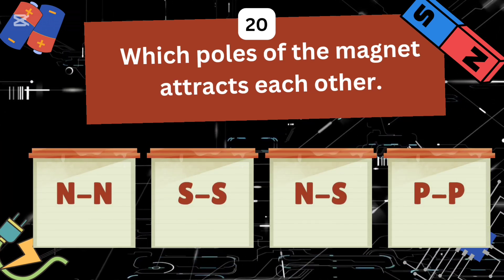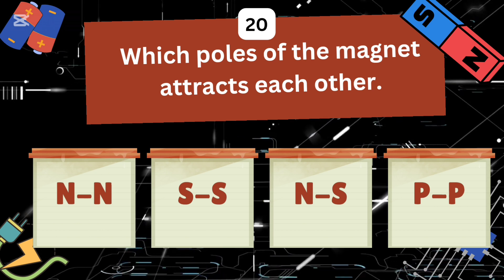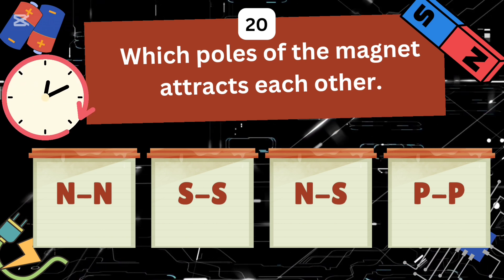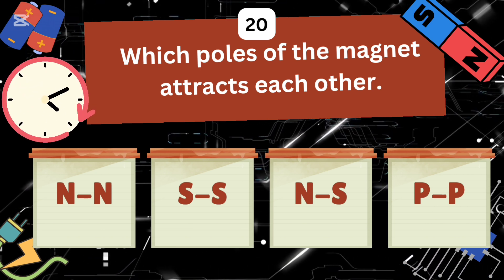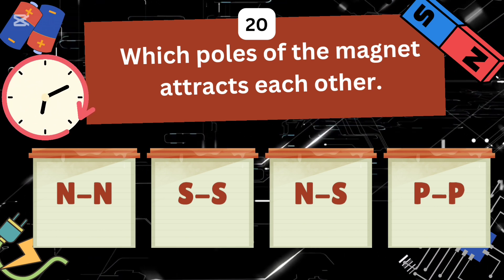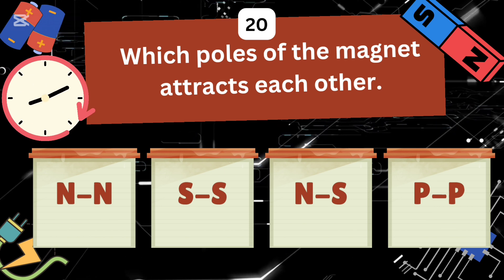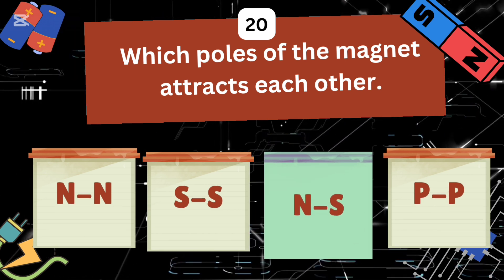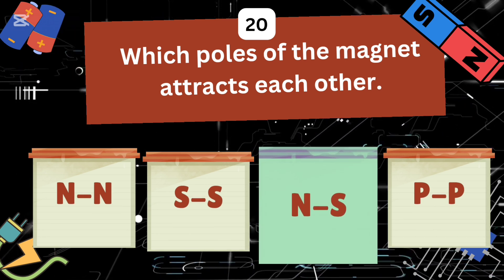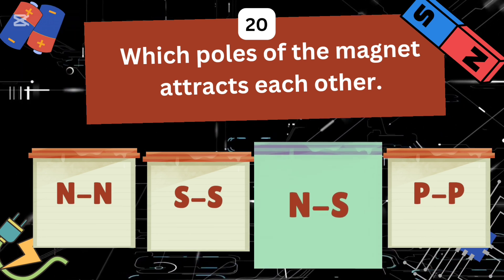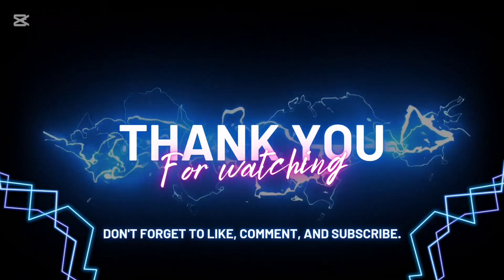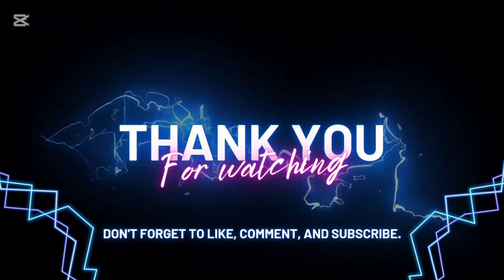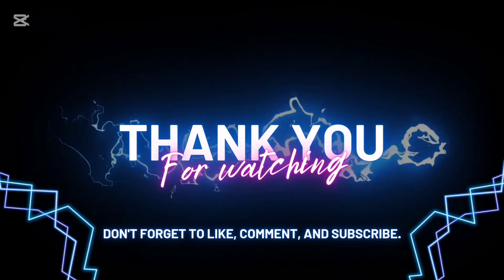Which poles of the magnet attract each other: north-north, south-south, north-south, or pole-pole? Right — north-south poles attract each other. Tell me in the comments how many questions you got correct. Till then, bye!